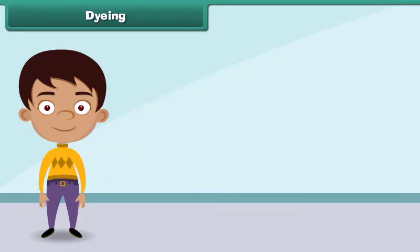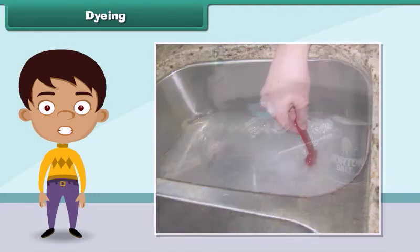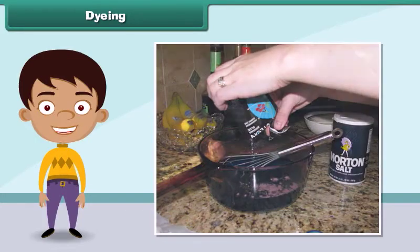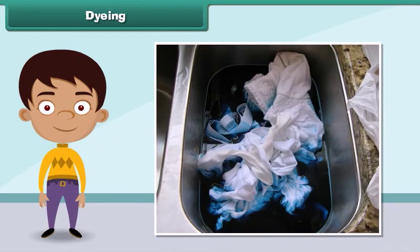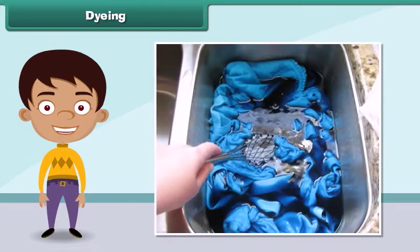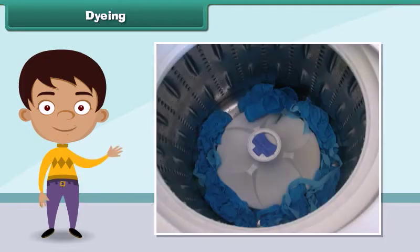Dyeing a fabric means giving a new color to the fabric. To dye a fabric, first a solution of dye and salt in warm water is prepared. Next, the fabric is dipped in the solution. Then the fabric is removed from the solution after an hour and washed. Finally, the fabric is dried.